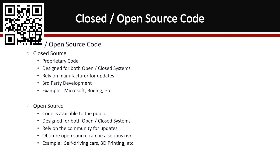Open source is code that's available to the public — like the Android platforms from Google. They rely on the community for updates, so the community can hopefully find flaws and come up with patches without being reliant on a vendor. However, open source can cause risk — depending on the size of the project, you don't always have good quality control on the code you might be using, and there could be bad code hidden in there.